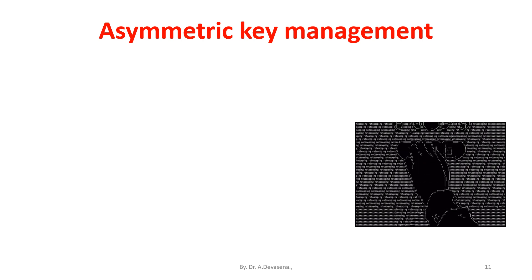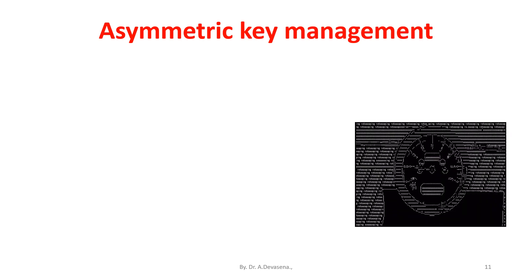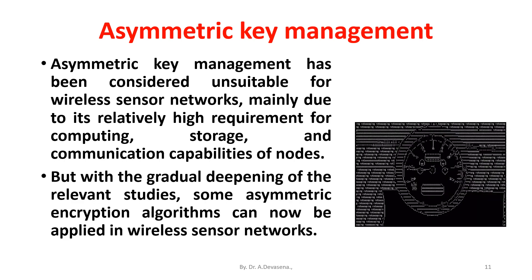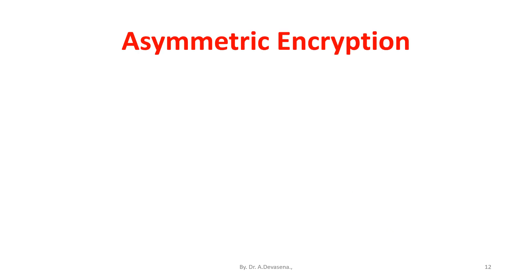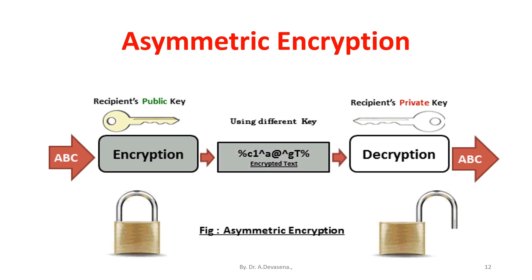Asymmetric key management has been considered unsuitable for wireless sensor networks, mainly due to its relatively high requirement for computing, storage, and communication capabilities of nodes. But with the gradual deepening of relevant studies, some asymmetric encryption algorithms can now be applied in wireless sensor networks. In asymmetric encryption, on the transmission side the recipient's public key is used, but on the receiver side the recipient's private key is used — that is, the keys used in transmission and reception are different.